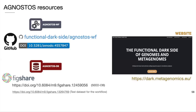I would like to close with some links in case you want to use Agnostos yourself. You can download it as a Snakemake workflow from GitHub using the link on the upper left of the slide. The Agnostos databases are also available for download from Figshare — the link to the seed database and a test database for quickly testing the workflow are provided. If you want more details, you can visit our website at dark.metagenomics.eu, where you can find a detailed description of the methods used in each workflow step and the results of the exploration of the unknown fraction of genomes and metagenomes.